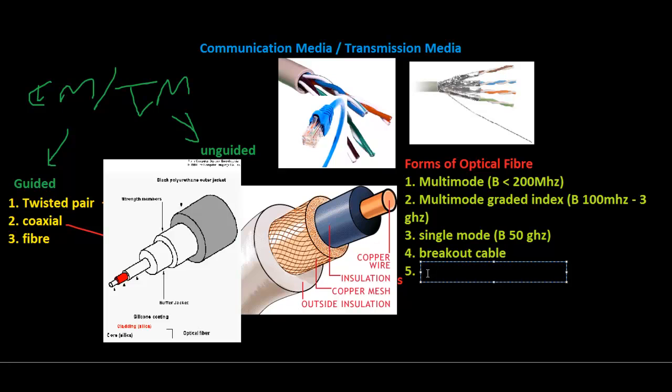Another type is called the distribution cable. The distribution cable is really a breakout cable in a larger jacket. The final type is called the loose cable. The loose cable has one to 12 fibers floating inside a loose tube filled with gel.